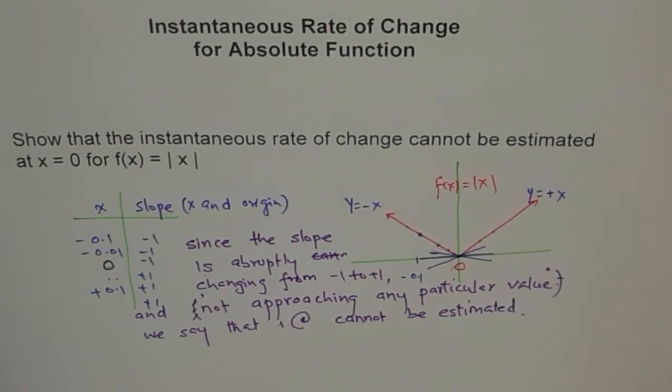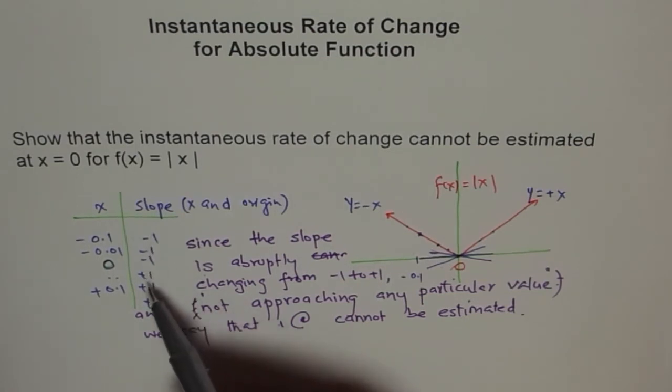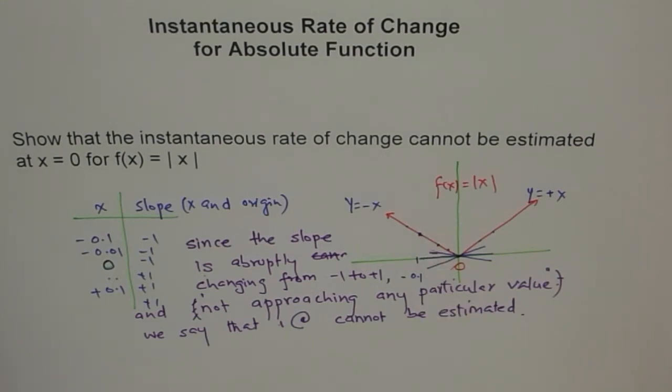If it had been, if it would have been approaching some value, we could have estimated that value is our answer. But now, it is not approaching any value. It remains minus 1, minus 1, and then becomes plus 1, plus 1 all throughout. Do you see that? So, these are two ways to explain this question, which is normally asked in the communication.